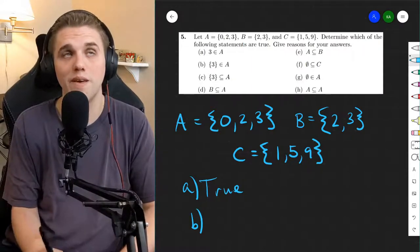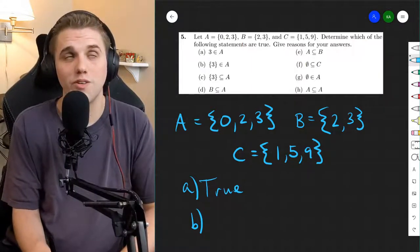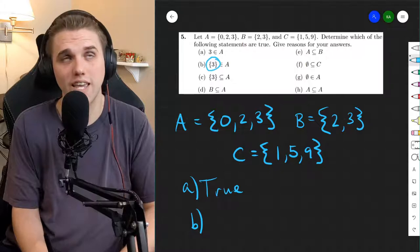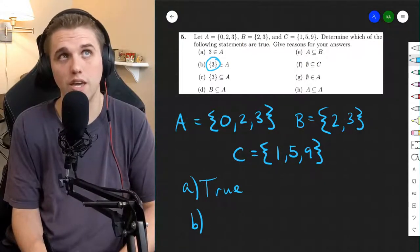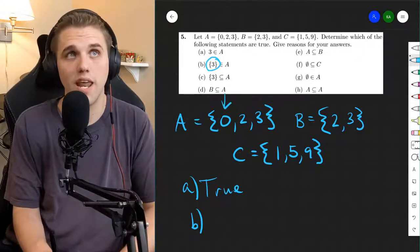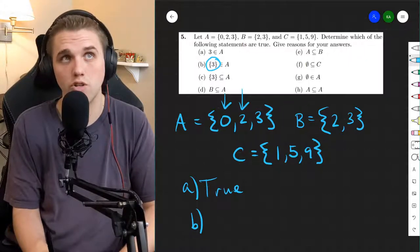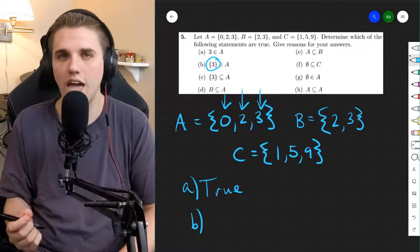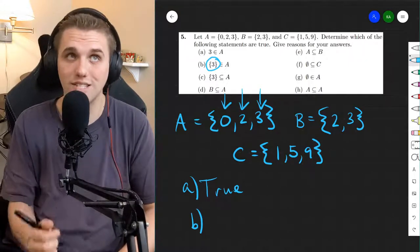What about B? So B is asking if the set containing the element three is in A. But in A, I see the element zero, two, and three. The objects in A are numbers, not sets.